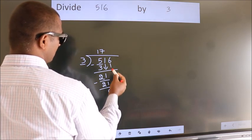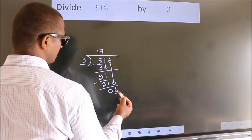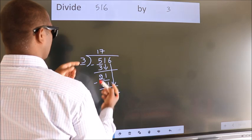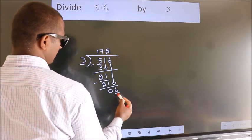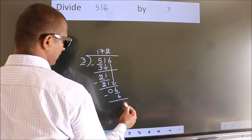After this, bring down the beside number. So 6 down, so 6. When do we get 6 in the 3 table? 3 twos, 6. Now we subtract. We get 0.